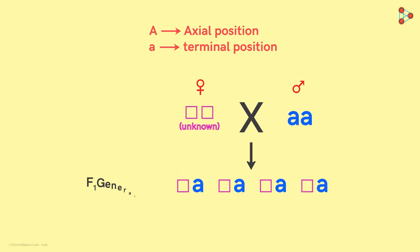After crossing, the F1 generation will get one allele a written in lower case from this parent! So we write these a in all these four places!